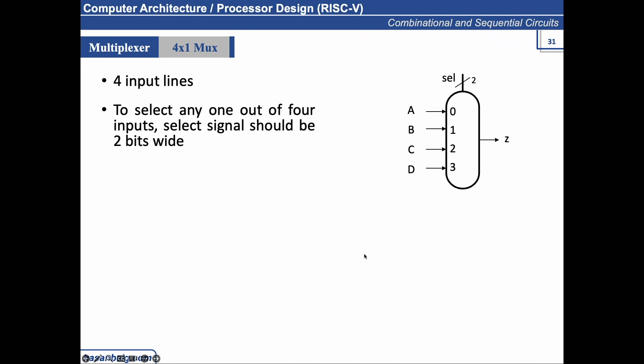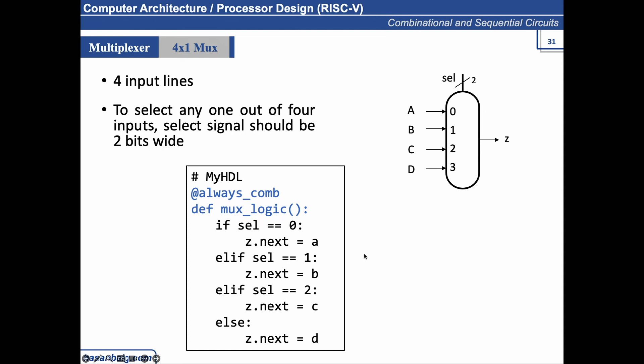All right. In your HDL program, which you are going to start from the next lab, you can simply write a code using if-elif structure to create a multiplexer using Python in Python programming. So if select line is 0, Z dot next, what will be the next value of Z? Z will be A. And same is the case with 1, 2, and so on.